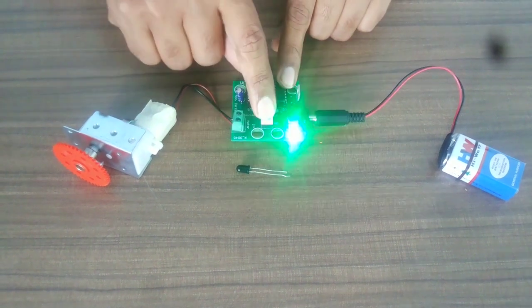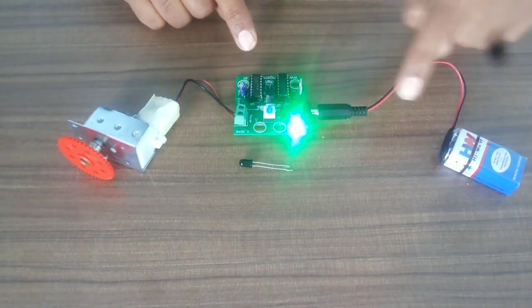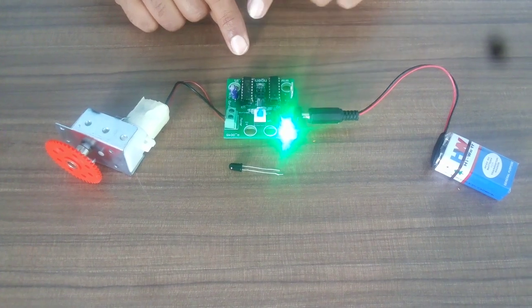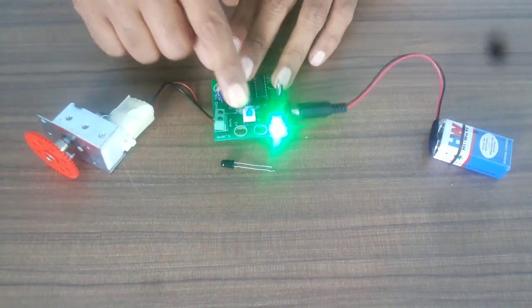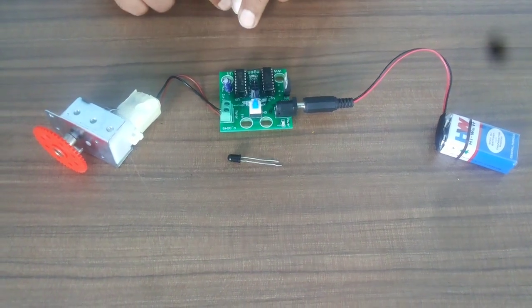Now, when you switch it on, it will give an indication that power is coming to PCB if green LED works. If green LED is not working, check the connection of battery. I am putting it switch off.